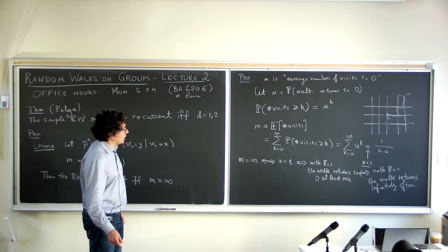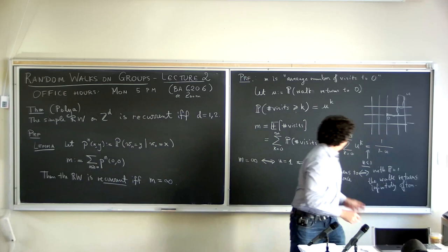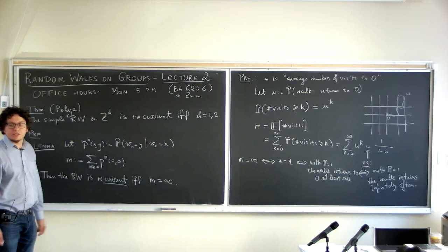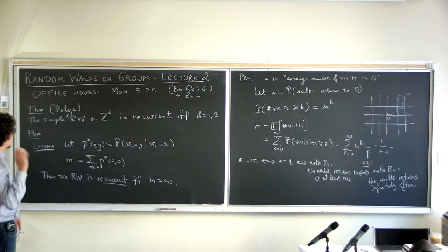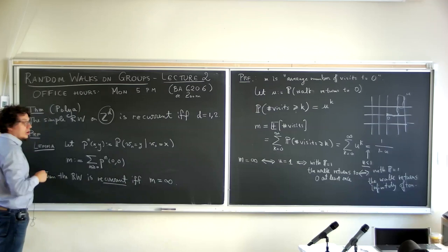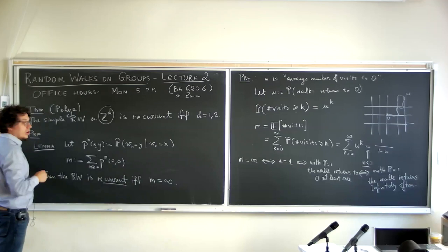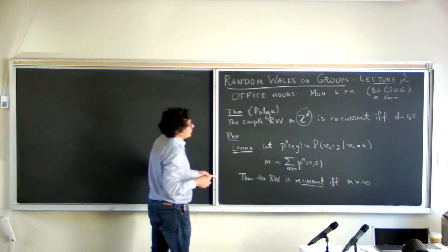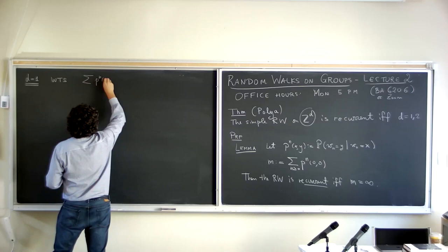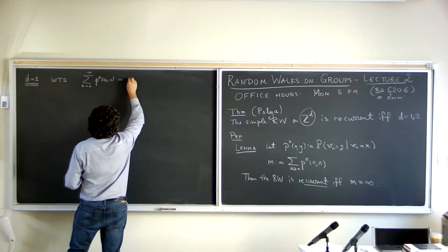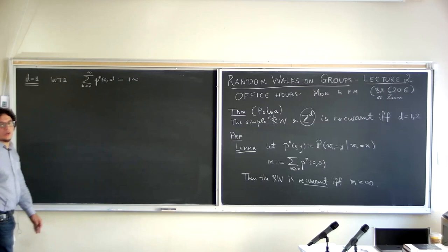This is a sort of famous lemma in probability. Are there any questions about this lemma or proof? Good. So now we just have to check in different cases — for the walk on Z^d — whether the series of P_n(0,0) is divergent or convergent.